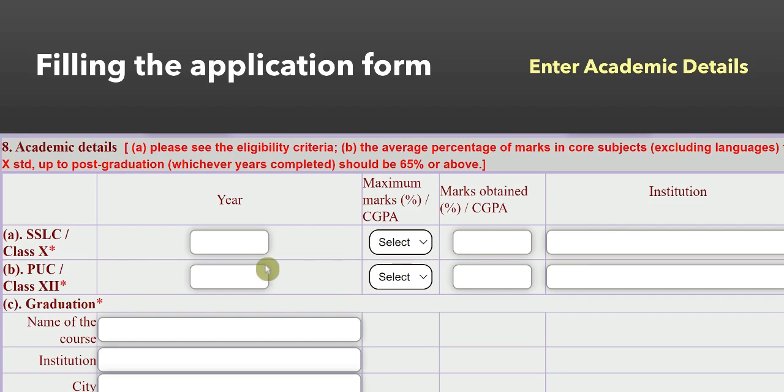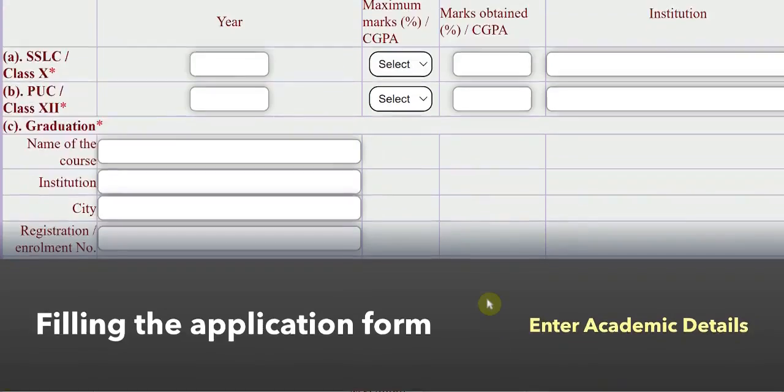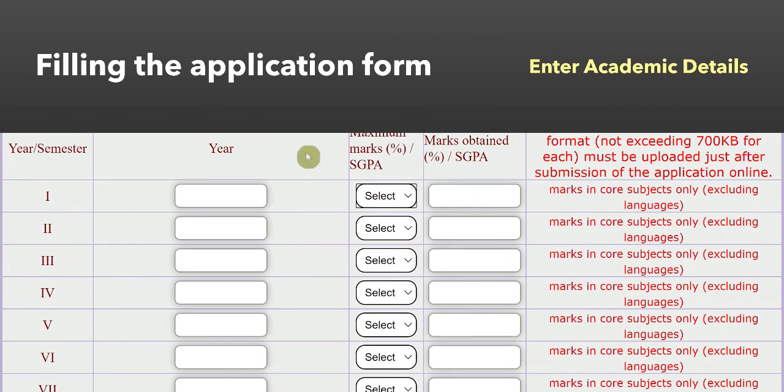After that, you have to give the details of graduation. Once you give the details of graduation, you can see it is similar to the previous one only. One thing you have to keep in mind is that you have to enter your marks in core subjects only. That is, excluding the languages.